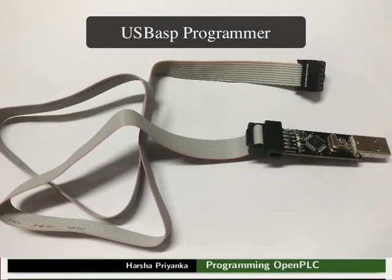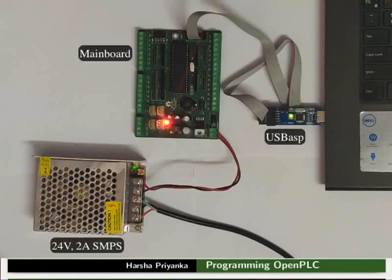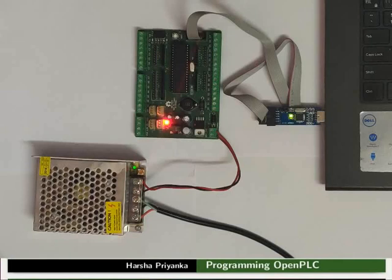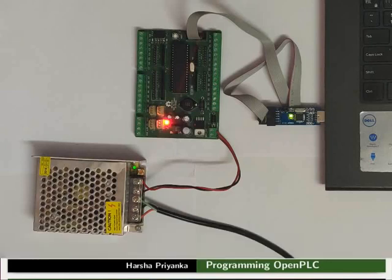We are using a USB ASP to program our mainboard. Make the connections as shown in the picture. Connect SMPS and USB ASP to the mainboard as shown here. Recall that we have explained these connections in the earlier tutorials. Turn on the power supply.